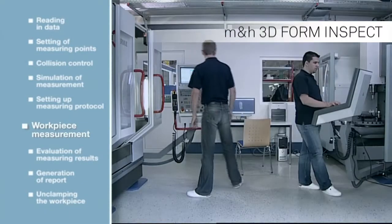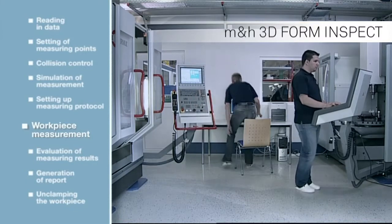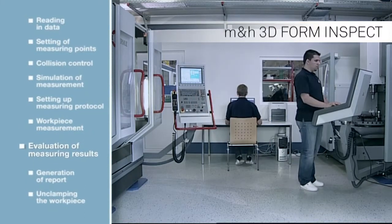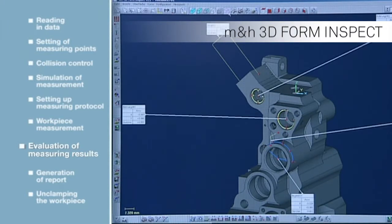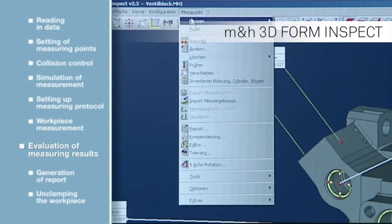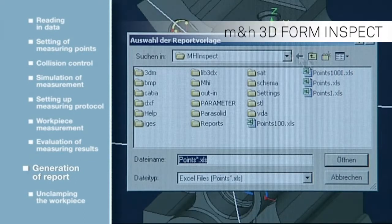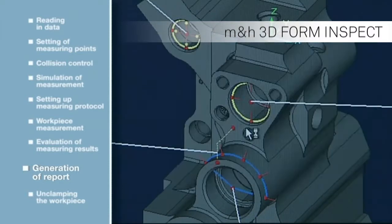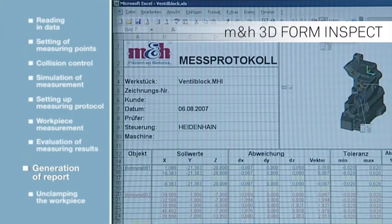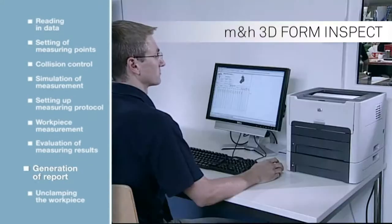Once the measuring routine on the machine is completed, the user can immediately detect if the workpiece is within preset standards. In the event of any deviations, reworking can be done without delay. The generated measuring protocol keeps records of workpiece quality, and the result is traceable at any time. The printed protocol comprises all relevant data of the workpiece and can easily be adjusted to customer requirements.